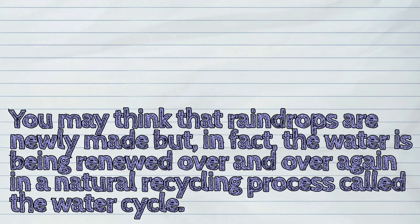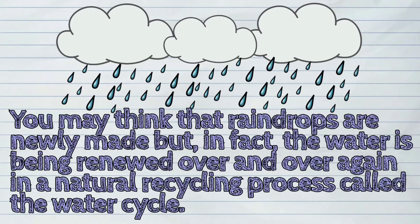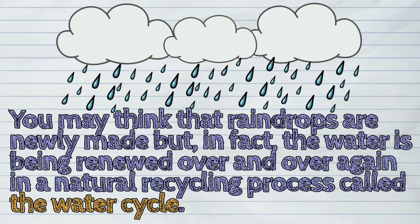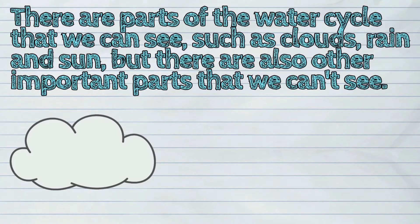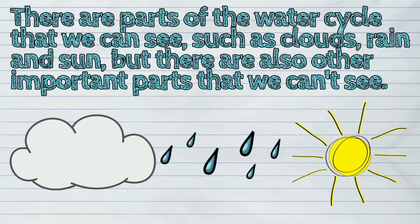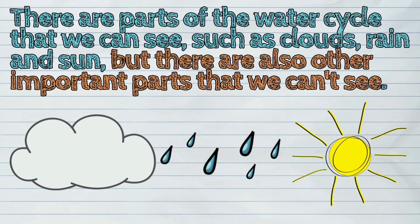You may think that raindrops are newly made, but in fact, the water is being renewed over and over again in a natural recycling process called the water cycle. There are parts of the water cycle that we can see, such as clouds, rain, and sun. But there are also other important parts that we can't see.